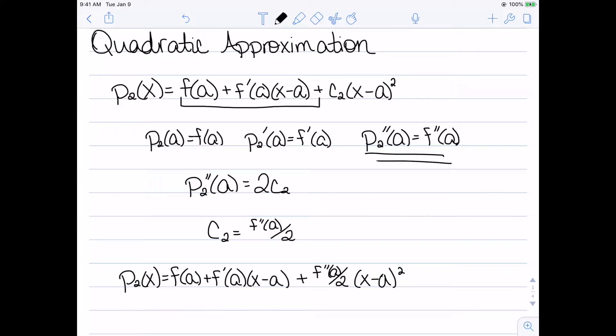So now I have that p_2(x), my quadratic approximation, is f(a) plus f'(a)(x minus a) plus the second derivative of f(a) over 2 times (x minus a) squared.